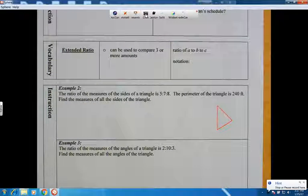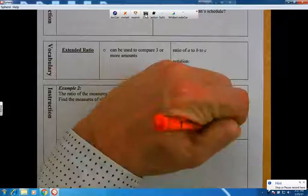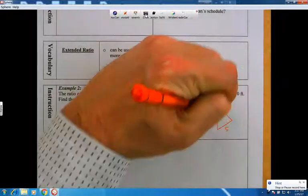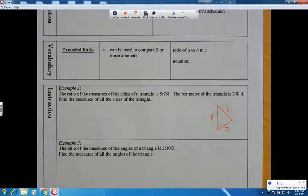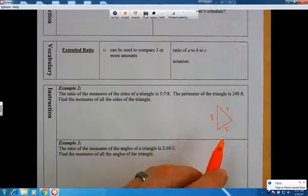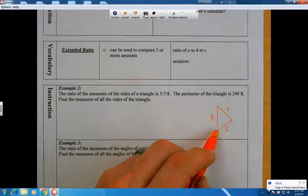And it says that the ratio of the measures of the sides of the triangle are 5 to 7 to 8. Okay, so I'm going to put a 5 and 7 and an 8 there. And it also says that the perimeter of the triangle is 240 feet. Now a perimeter is when you add up all of the sides of a triangle.